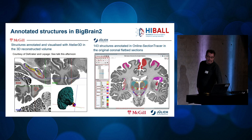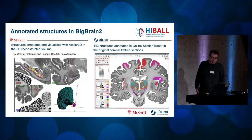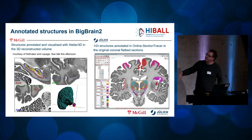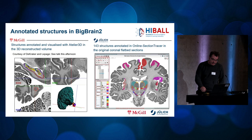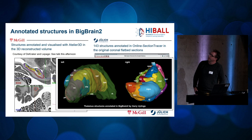The high-resolution dataset allows larger structures to be annotated directly within it. As an example, on the left side you can see the hippocampus structure annotated by John de Kroker. In contrast, in Jülich the annotations are drawn in the unrepaired and non-reconstructed original sections. The big advantage is a direct link to the 1-micron datasets. So far, we have 143 structures already annotated in BigBrain 2, and with pre-computed transformations we can transform the annotations into the 3D reconstructed BigBrain 2 space. Here we see the thalamus structures annotated in BigBrain 2 by Harry Eulings as an example.